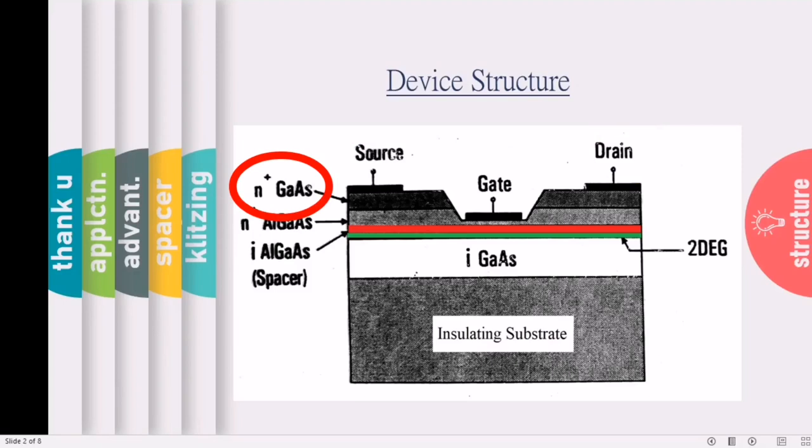And the layers of MODFET are metals, then N-type AlGaAs, then intrinsic GaAs. Here it is denoted as i-GaAs, which means intrinsic gallium arsenide. And the basement layer, the basement layer can be insulating substrate.